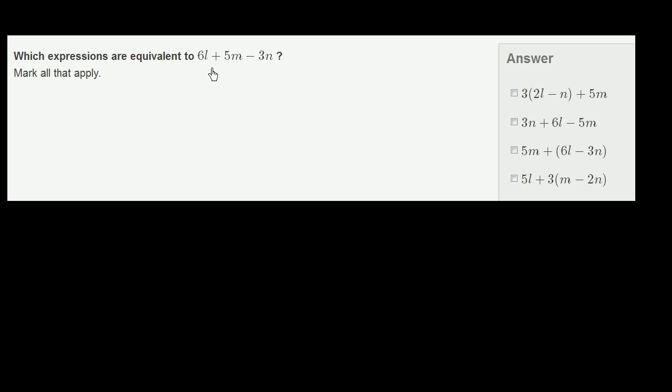Let's do a couple more of this. Which expressions are equivalent to 6l plus 5m minus 3n? Mark all that apply. So let's look at this first one. If I were to distribute the 3, I would get 6l minus 3n plus 5m. Oh, plus 5m. Let me be very careful here. So if I were to distribute the 3, 6l minus 3n plus 5m.